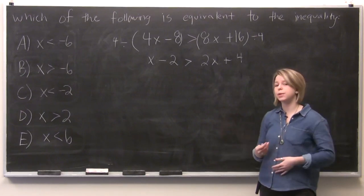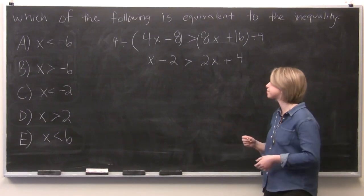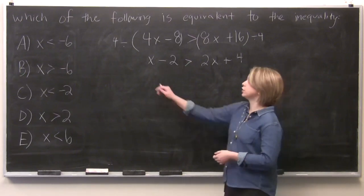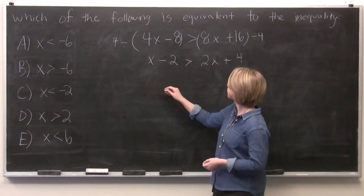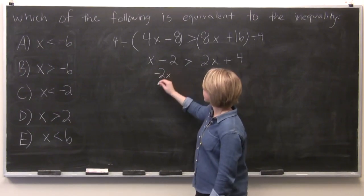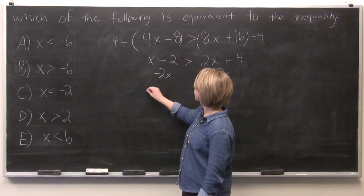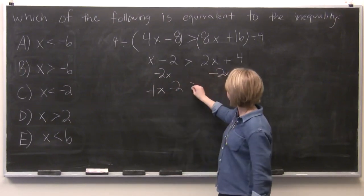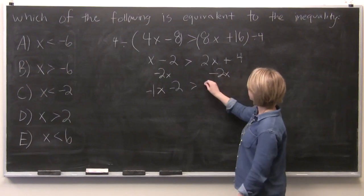And we can start to play with addition and subtraction. So let's move all of our x values to the left side of the problem. So let's subtract 2x from either side. So x minus 2x is negative 1x minus 2 is greater than positive 4.